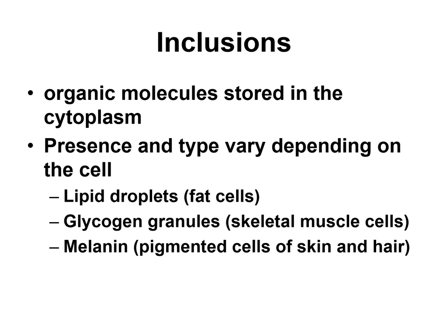Skeletal muscle cells use glucose as a source of energy to make ATP, and glucose is stored in skeletal muscles as glycogen granules — those would be inclusions. Certain cells, such as cells of the skin and hair that are pigmented, have a protein called melanin that gives those cells a particular color, and those are also examples of inclusions.